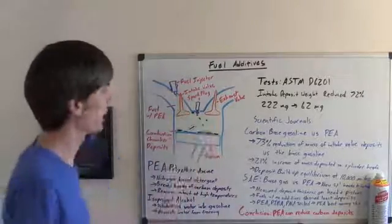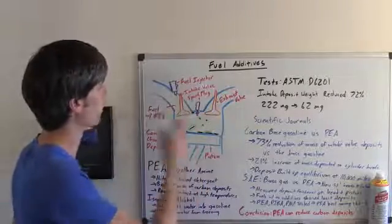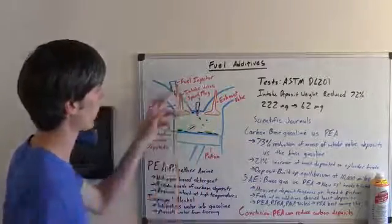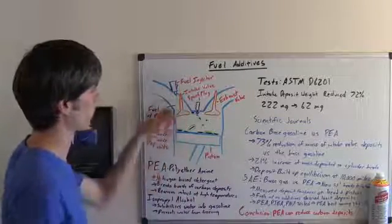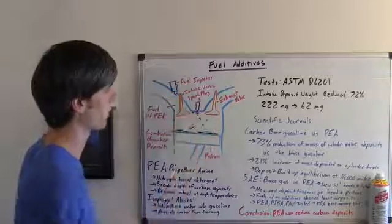You'll put the fuel additive in your fuel tank and then it'll mix with your gasoline or diesel fuel and then go through your fuel injector. Through the fuel injector it'll spray and clean off the back of your intake valve, then it'll go within the combustion chambers.